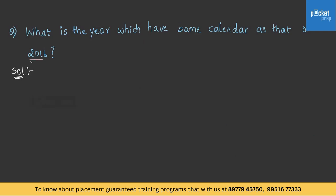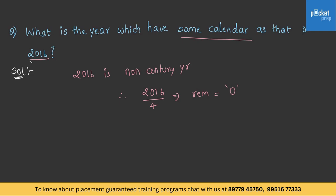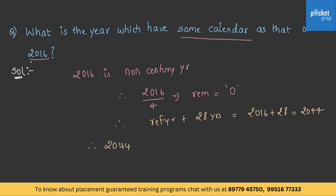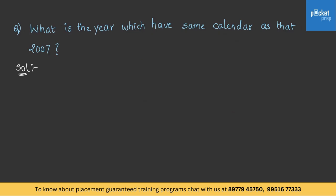Example: When does the 2016 calendar repeat? 2016 is a non-century year. 2016 ÷ 4 gives remainder 0. Since remainder is 0, add 28 years: 2016 + 28 = 2044. Therefore the 2016 calendar repeats in 2044.